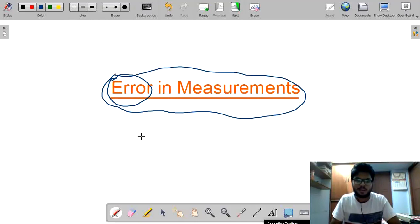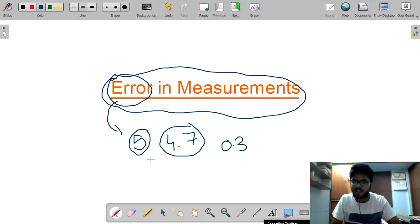Example: our desired value is 5, but we are getting the value as 4.7. Now, what is the error here? Error is 0.3. This is called an Error. This is the required value and it is the measured value. So, it is a deviation of a true value from our desired value.